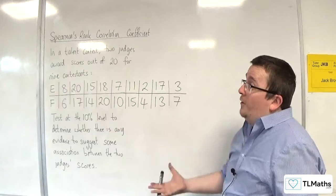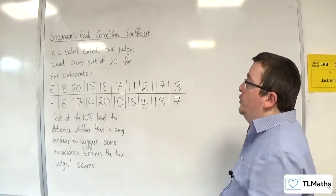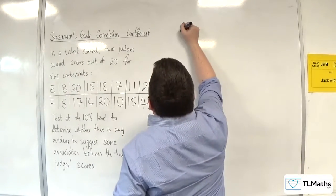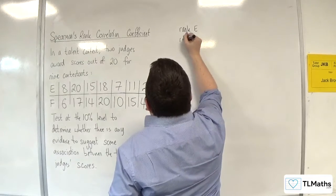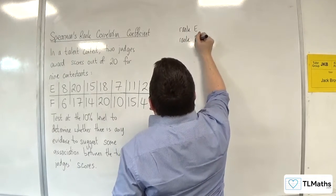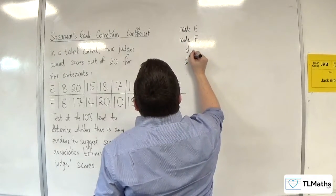The first thing we need to do is calculate Spearman's rank correlation coefficient. So we're going to need to rank E and F and work out the difference and the difference squared.